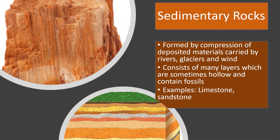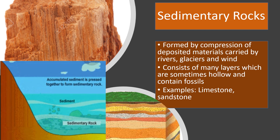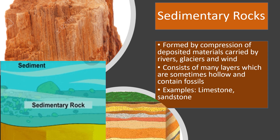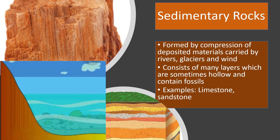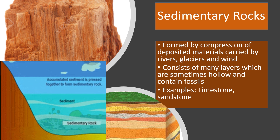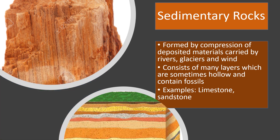The second type of rock is sedimentary rock. Sedimentary rock is formed by compression of deposited materials carried by rivers, glaciers and wind. Sedimentary rock consists of many layers which are sometimes hollow and contain fossils. Examples of sedimentary rocks are limestone and sandstone.